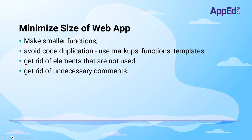To increase web app performance, start by minimizing the size of your web app by making smaller functions. The rule of thumb: one function should do only one thing. Also try to reuse code at your disposal — use markups, functions, and templates. There's no need to duplicate code you already have. And keep your code clean: get rid of garbage.